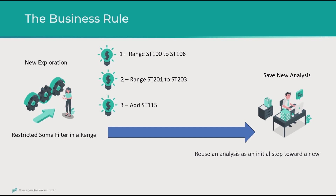In this sample, we need to filter only a store range between store 100 to store 106, like a differential store. In a second moment, I will add another range filter — in this case, between store 201 to store 203. And last, I will use the clipboard and add another member to select. Now let me show you how to use it.